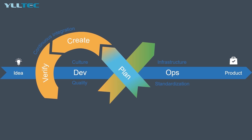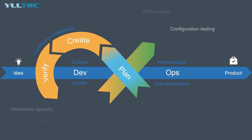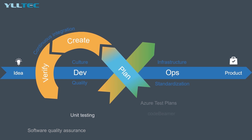The verify stage is directly associated with ensuring the quality of the software release — activities designed to ensure code quality is maintained and the highest quality is deployed into production. Main activities include acceptance testing, regression testing, security and vulnerability analysis, and performance configuration testing. Key disciplines and methodologies include information security, profiling, software quality assurance, and unit testing. Tools include Azure Test Plans, Codebeamer, Rectest, Selenium, and SonarQube.